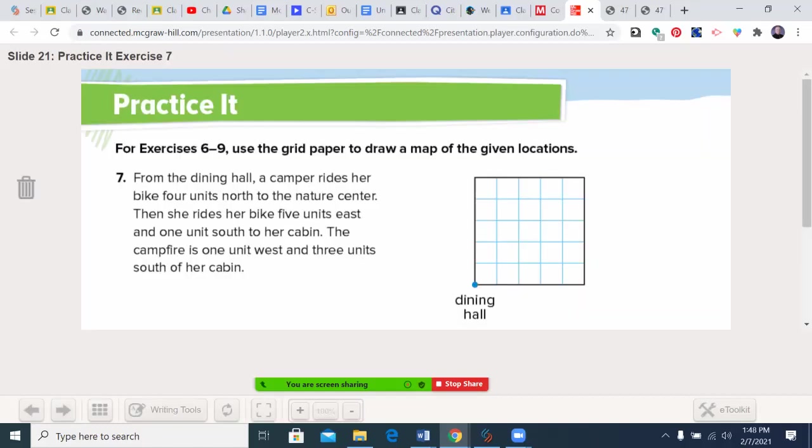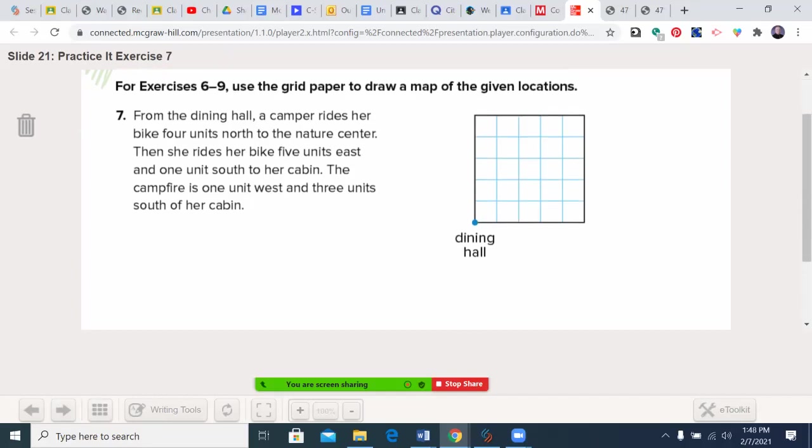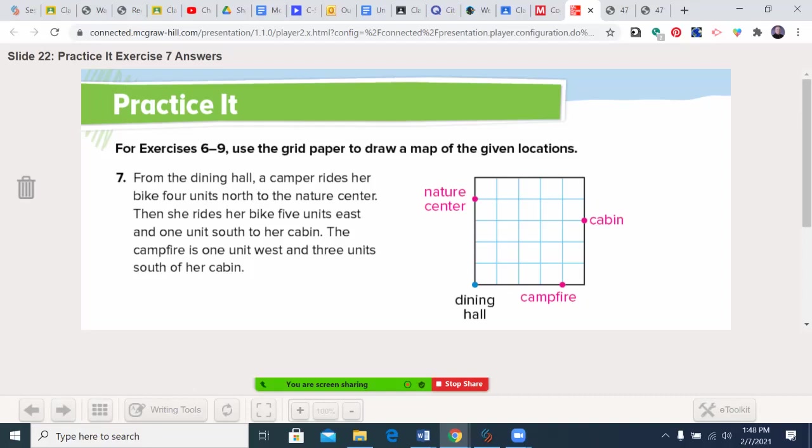Let's do one more. Go ahead and do number seven. You may pause the video and then unpause it when you're ready. Let me pause the video now. Welcome back, let's see how you did. From the dining hall, a camper rides her bike four units to the north to the nature center. There we go. Five units east and one south to the cabin. So one, two, three, four, five east, one south of the cabin. Campfire is one west and three south—one, two, and three. There you go.